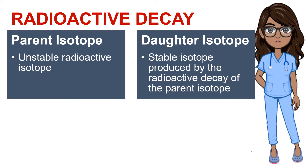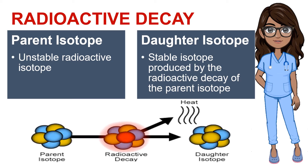Again, the parent isotope is the unstable radioactive isotope, and the daughter isotope is the stable isotope produced by the radioactive decay of the parent isotope. Consider the following figure: from one parent isotope, it undergoes radioactive decay and produces a daughter isotope and heat.